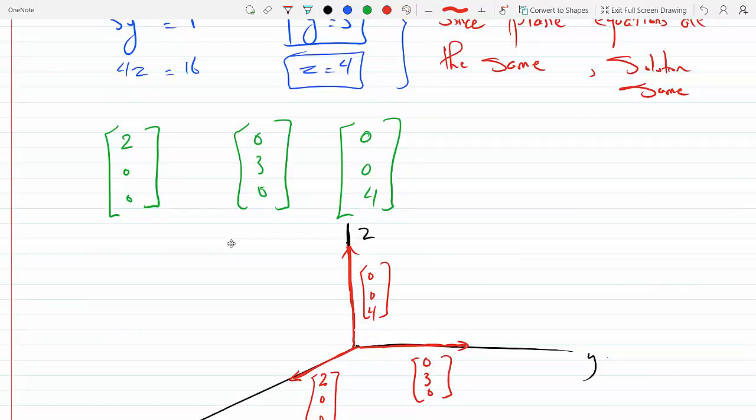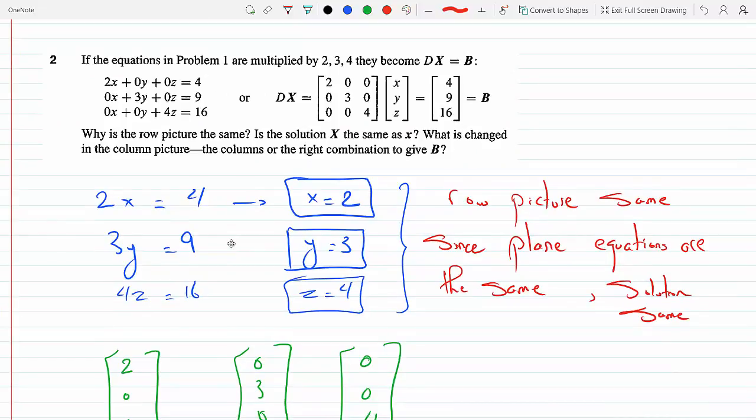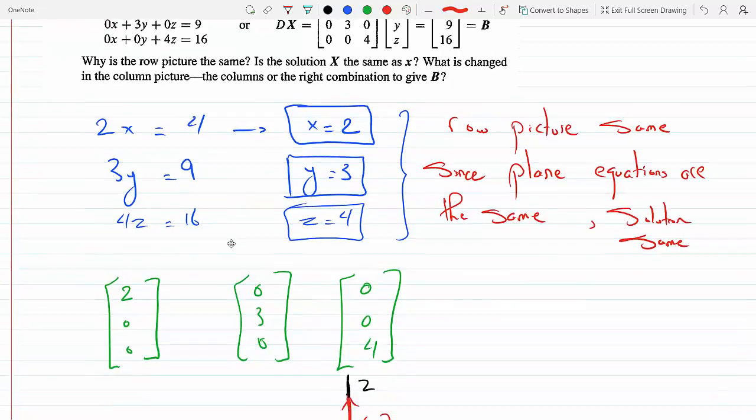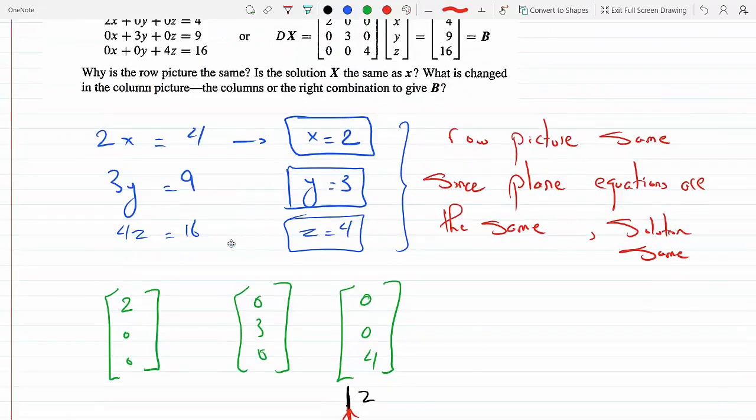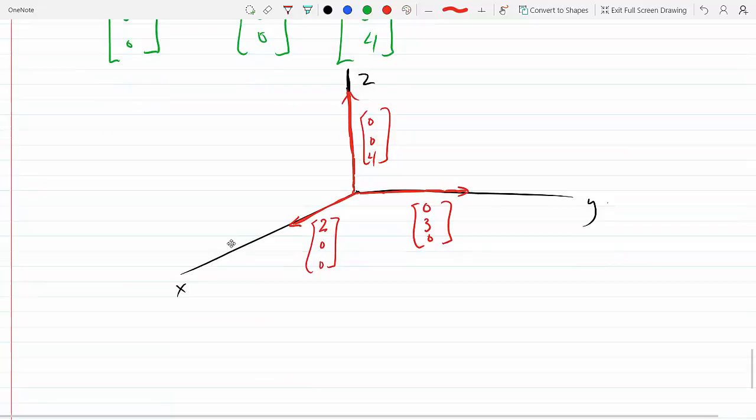So the columns are changed, and does the right combination B remain the same? The combination remains the same. The combination of B remains the same.